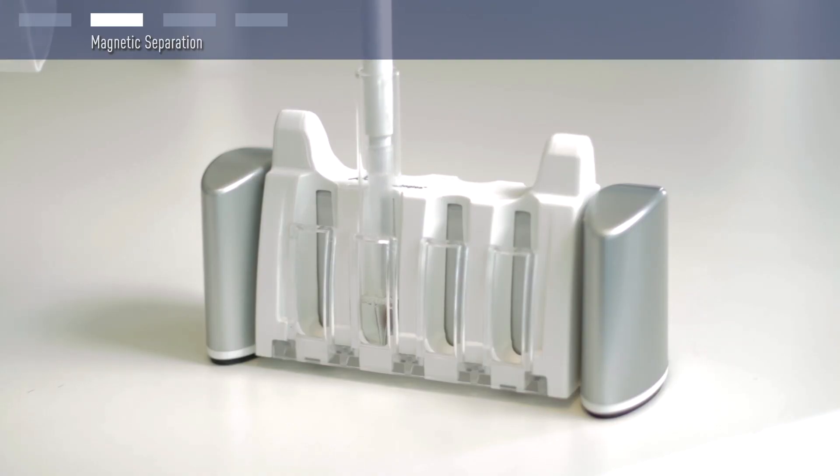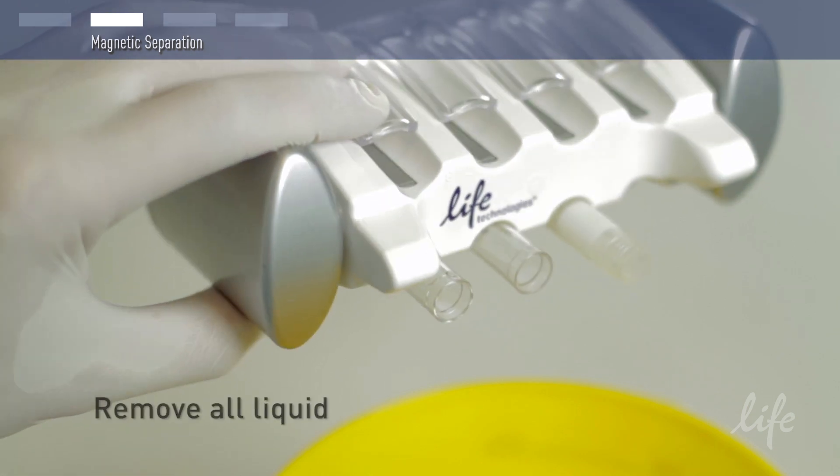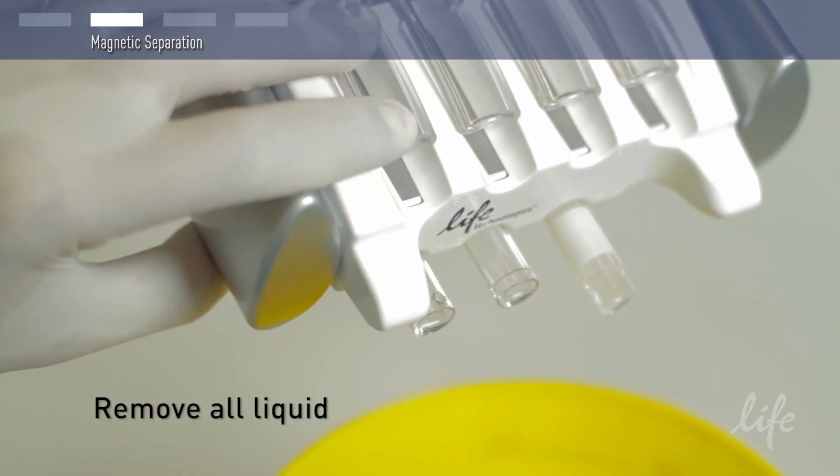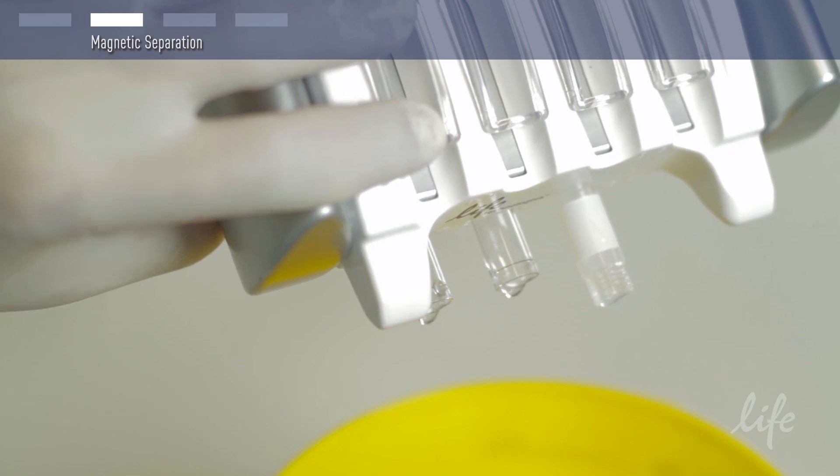You can pipet off or even decant the liquid, whatever you prefer. Just make sure you get rid of all the liquid. If you decant and there are some droplets left, you can use a small piece of paper to remove them.